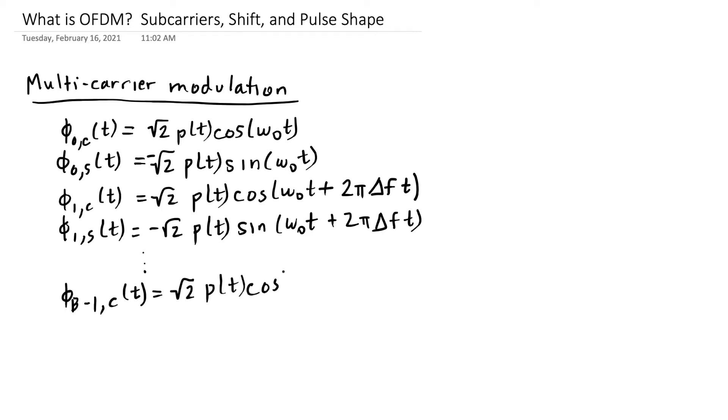We're going to keep doing this up to capital B. The last frequency will be omega naught plus 2 pi times (B-1) times delta f, and again, the minus square root of 2 p(t) sine at that same frequency. B is the number of subcarriers.